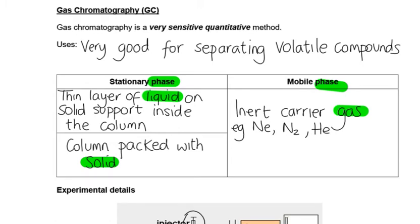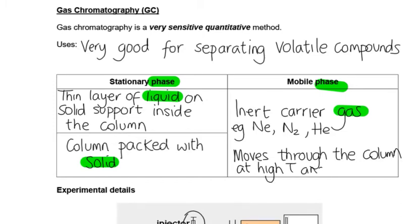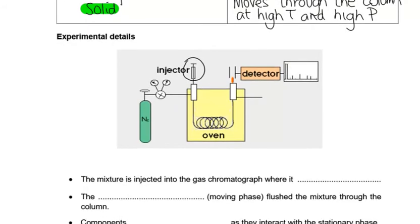This time, whereas in TLC our mobile phase moved up, and in column chromatography our mobile phase moved down, this is going to move through the column because the column is not vertical. It's wrapped around, so it's just going to be pushed through the column. And it's going to be done at a high temperature and a high pressure. The gas needs to be pressurized.